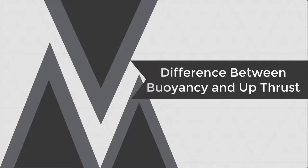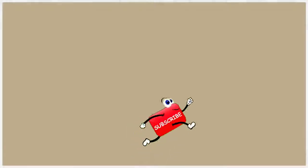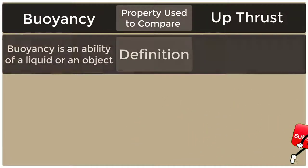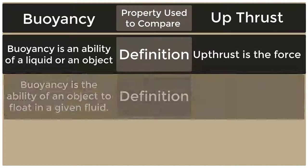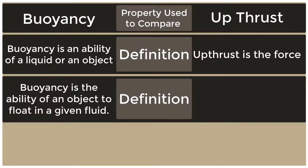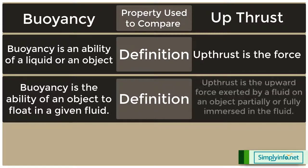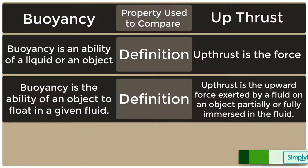Difference Between Buoyancy and Upthrust. Buoyancy is the ability of an object to float in a given fluid. Upthrust is the upward force exerted by a fluid on an object partially or fully immersed in the fluid.